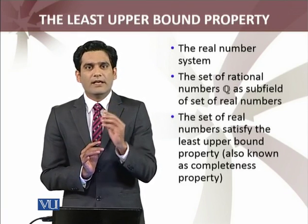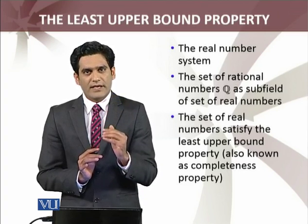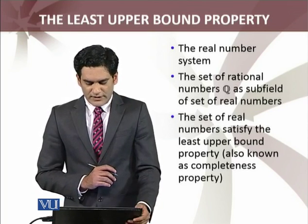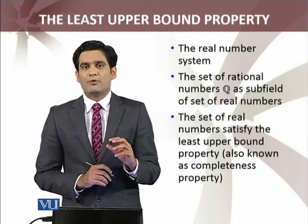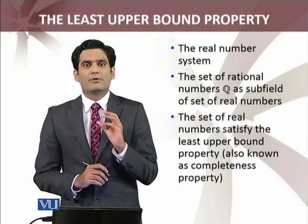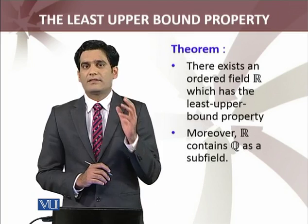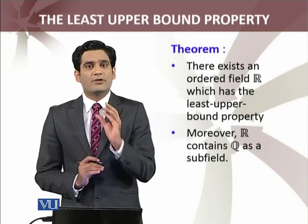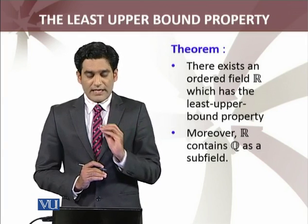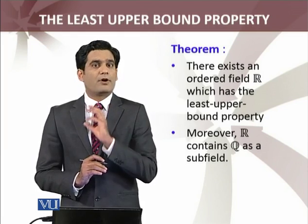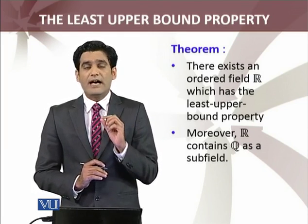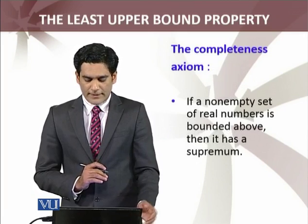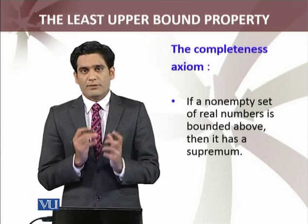The set of rational numbers satisfies the field properties, so the set of rational numbers will be called the sub-field of the real numbers. The set of real numbers satisfies the least upper bound property. Some books also call this the completeness property — if a set satisfies the least upper bound property, we say that set is complete. The theorem states: there exists an ordered field R which has the least upper bound property — in other words, which is complete. Moreover, R contains Q, the set of rational numbers, as a sub-field.